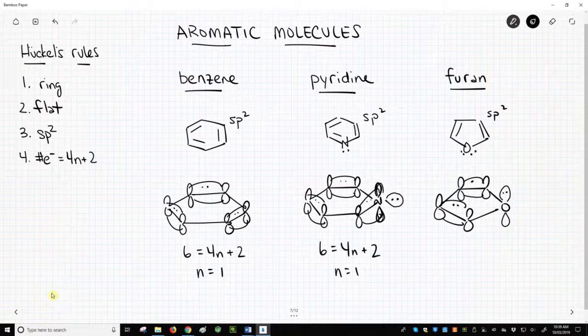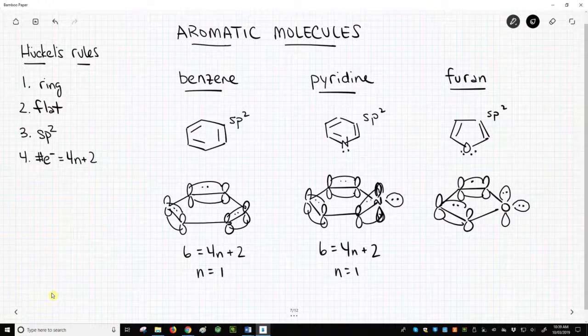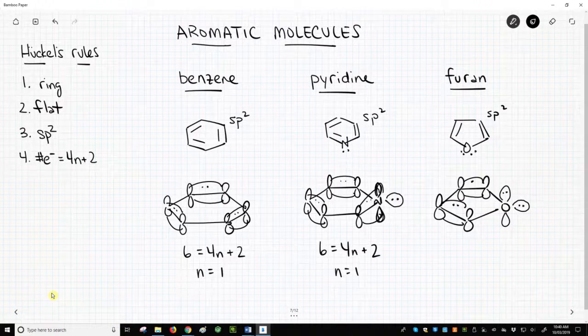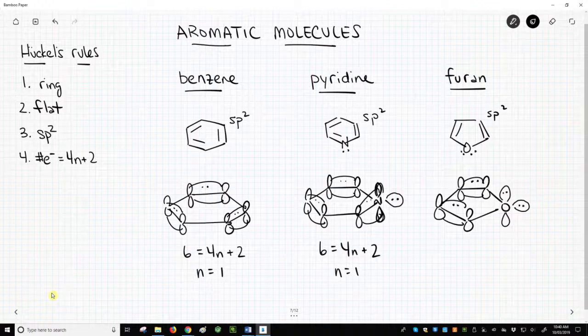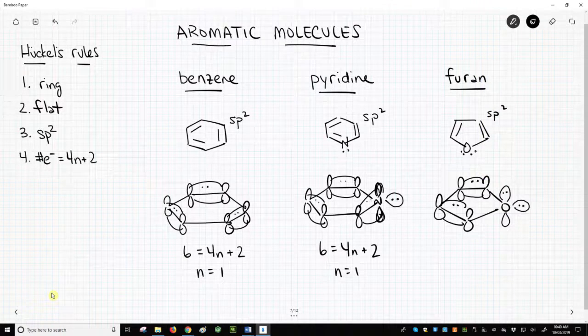And in that orbital, we're going to stick a lone pair. We have two lone pairs. Where is the second lone pair? Just like in pyridine, the second lone pair goes into an sp2 hybrid. It's perpendicular to the other p orbitals. It does not get counted. So we have total six electrons. 2 per pi bond, one in the p orbital and oxygen. That's six electrons. N equals 1. It's aromatic.